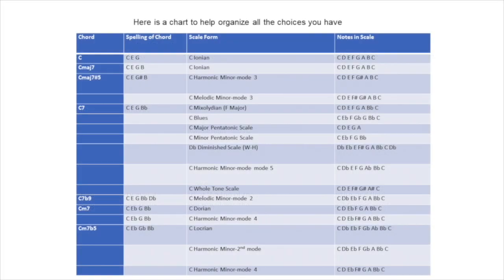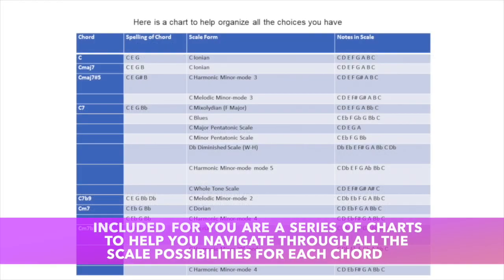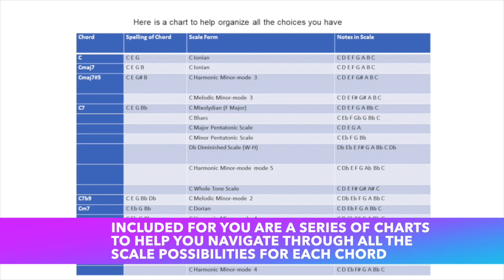In this chapter, I created a series of charts to help organize and consolidate all the different scale forms we have been studying. As you notice, it has the chords, the spelling of the chords, the scale form, and the notes in the scale. This should help you make better choices and also have a variety of choices when determining what scales you would like to use against a particular chord.